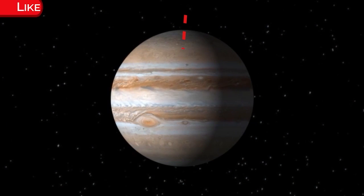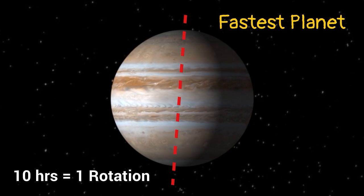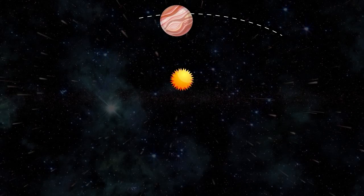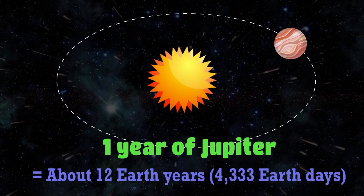Jupiter is the fastest planet in the solar system as it takes only 10 hours to complete one rotation around its axis. Jupiter makes a complete orbit around the sun in about 12 Earth years, 4,333 Earth days.